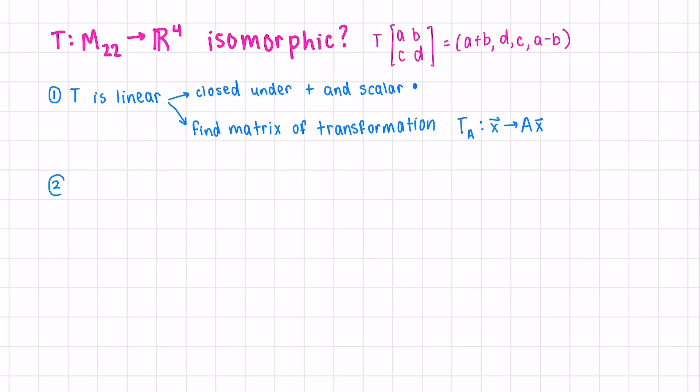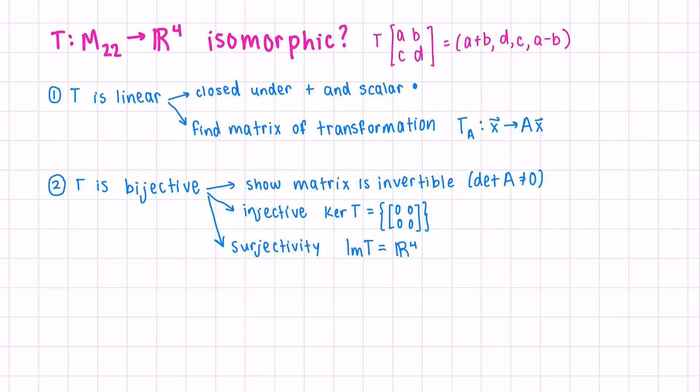Secondly, we need to show it is bijective. Again, we have multiple ways of approaching the problem. If we found the matrix of the transformation, we can show that this matrix is invertible. We could also show that the transformation is injective, meaning that the kernel of the transformation only contains the zero vector of our domain, which in this case would be 0000. We could also show surjectivity, that the image of the transformation is the entire codomain. Or lastly, we could show that a basis of M₂₂, when we apply the transformation to any basis, we get a basis of R⁴. As you can see, there's many ways to approach the question and prove that this transformation is isomorphic or show it's not.